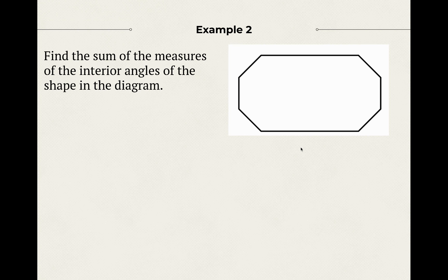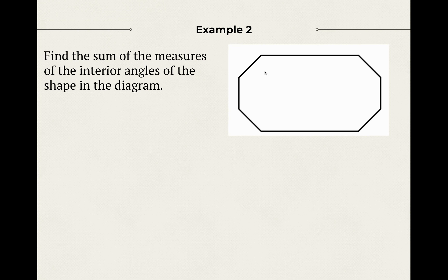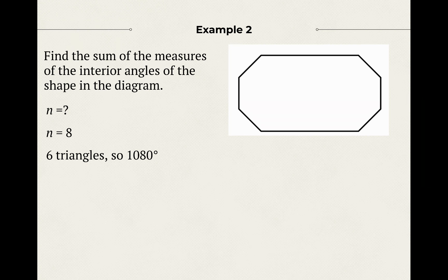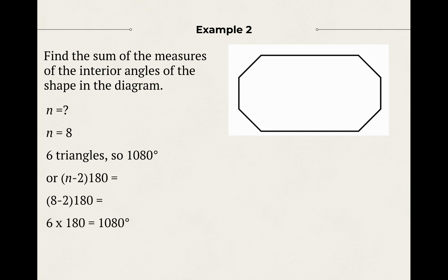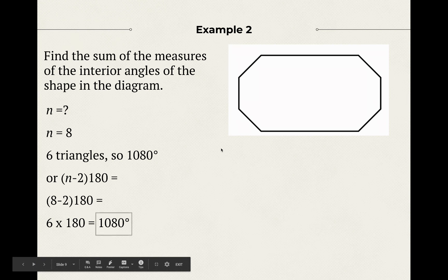Here's another example: find the sum of the measures of the interior angles of the shape in the diagram. Pause the video and work through this in your notes. First, figure out what n equals — just count the sides. N equals 8; this is an octagon. So n minus 2 equals 6, meaning there are 6 triangles. The math: 8 minus 2 times 180 equals 6 times 180 equals 1080 degrees. If you add up all the angle measures inside, they add up to 1080 degrees.